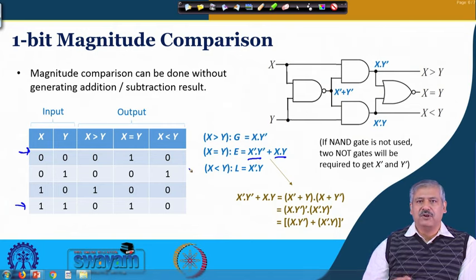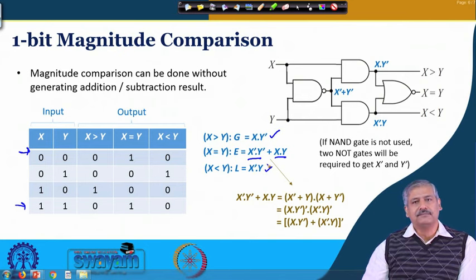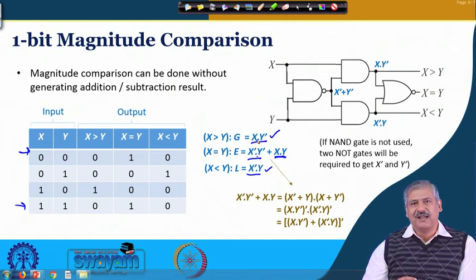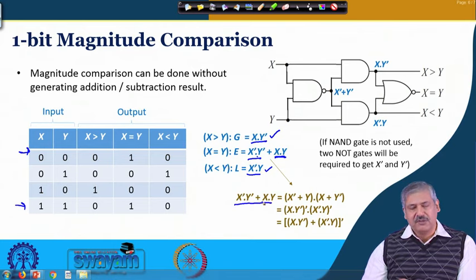These are the basic logic expressions by which you can get 1-bit comparison done. Since we are already generating x·y' and x'·y, do we additionally need to generate x'y' and x·y with two AND gates and OR them? Or can we make use of the already-generated terms so that no more than one additional gate is needed to get the x equal to y output?